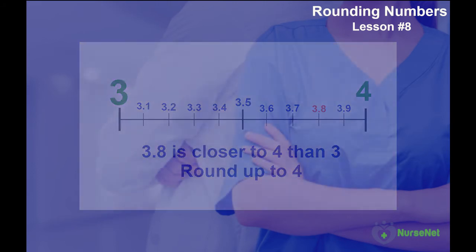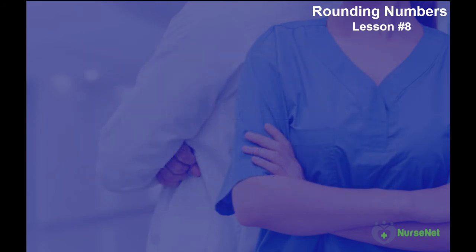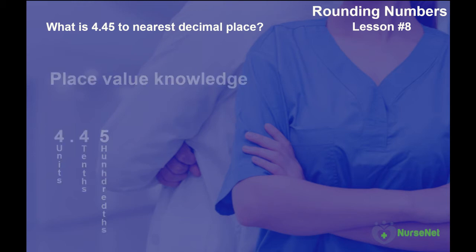Okay, let's look at more complex decimals. Let's say we want to round 4.45 to the nearest tenth, or put it another way, to the nearest decimal place. So by using our place value knowledge, we know we're going to round this number to 4 point and a tenth digit. Now, to do this, we need to look at numbers further down the decimal place value chain. In this instance, the hundredths column, which has a 5 in it.